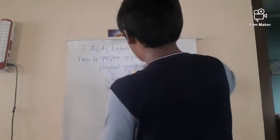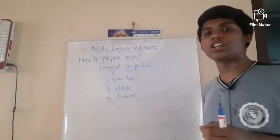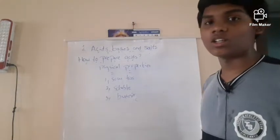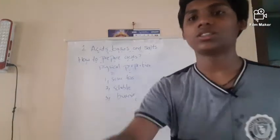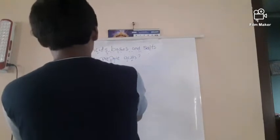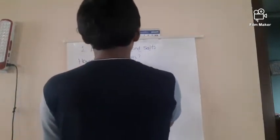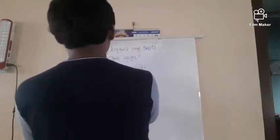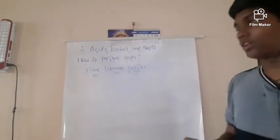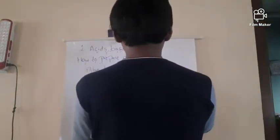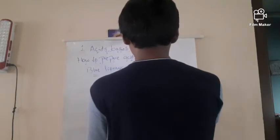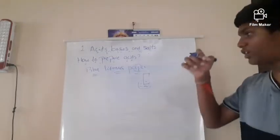Testing with litmus paper. Indicators we can use include blue litmus paper, red litmus paper, phenolphthalein, and methyl orange. For testing with blue litmus paper: take some amount of acid in a beaker, put a blue litmus paper in the acid. The color changes — when blue litmus paper turns red, that is an acid. Blue litmus paper in acidic medium turns red color.